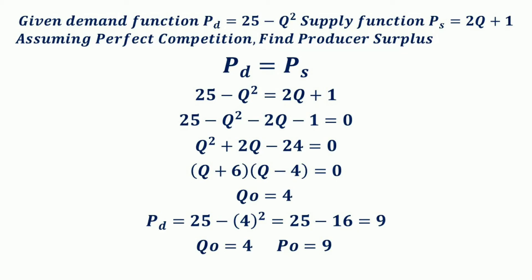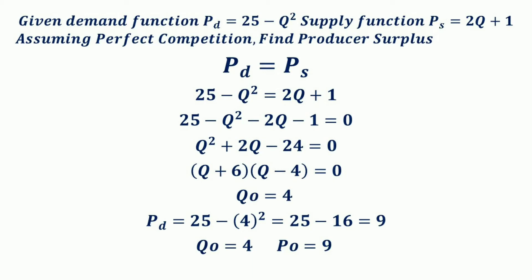For finding the producer surplus, the first step is to find the equilibrium price and quantity. The equilibrium price and quantity are not directly given, but under perfect competition, equilibrium is determined when demand equals supply, that is PD = PS. So: 25 − Q² = 2Q + 1.